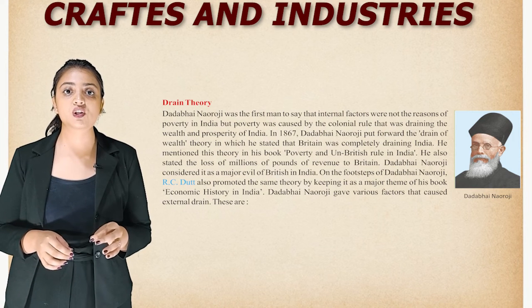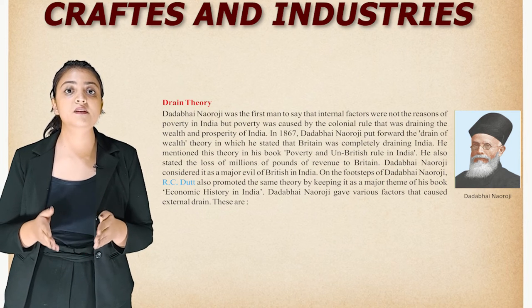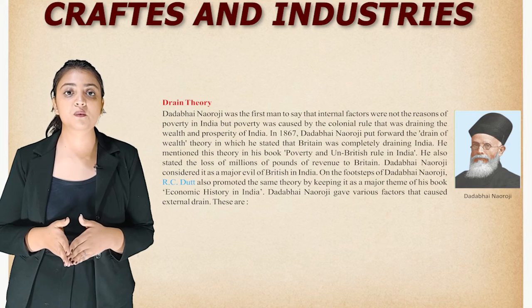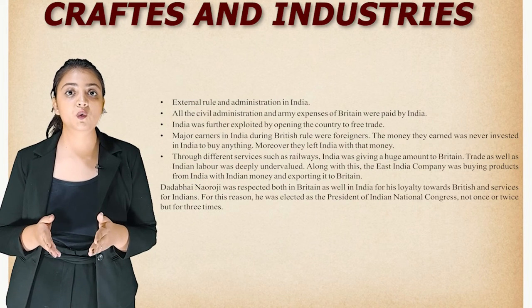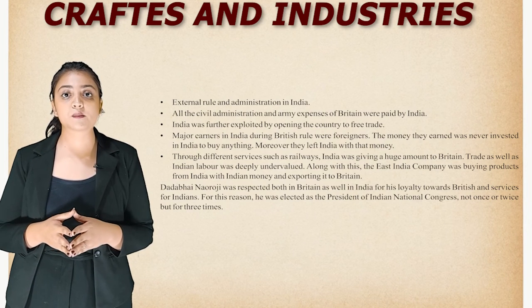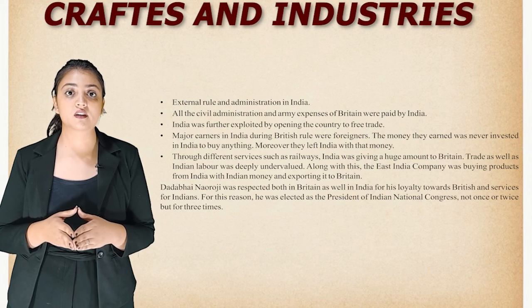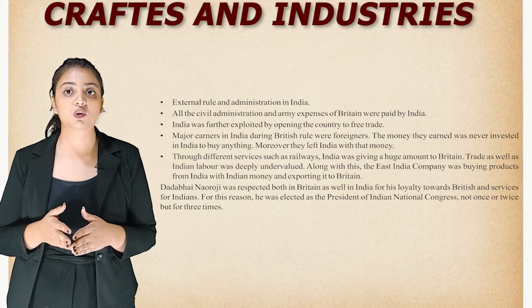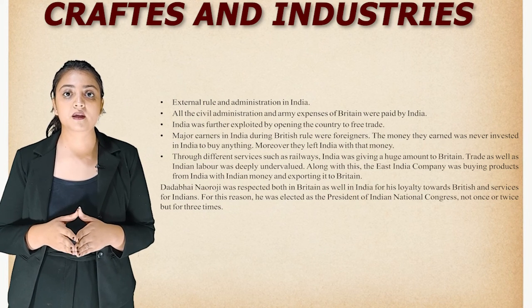In 1867, Dadabhai Naoroji put forward the drain of wealth theory, stating that Britain was completely draining India. He mentioned this theory in his book 'Poverty and Un-British Rule in India,' and also stated the loss of millions of pounds of revenue to Britain. R.C. Dutt also promoted the same theory as a major theme of his book 'Economic History of India.' Naoroji gave various factors causing this drain: external rule and administration; all civil administration and army expenses of Britain paid by India; India exploited by opening it to free trade; major earners in India were foreigners who left with their money; through services such as railways, India gave huge amounts to Britain; and the East India Company bought products from India with Indian money and exported them to Britain.